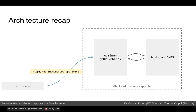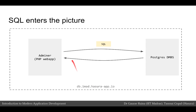This is what the architecture looks like. We had a browser, and using the browser we went to a web app at db.imad.hasurab.io, which was serving an application called Adminer. This application was a PHP web app talking to the Postgres DBMS, taking results from the Postgres DBMS and sending them back to us. Adminer is the client and the DBMS is the server.